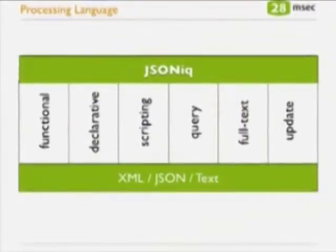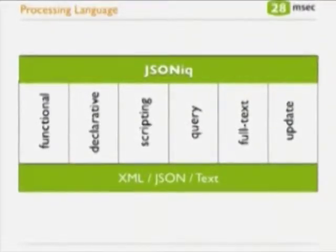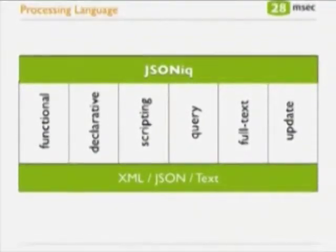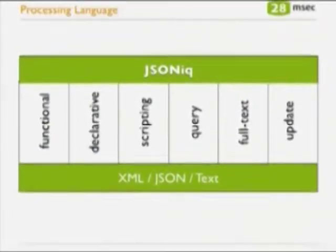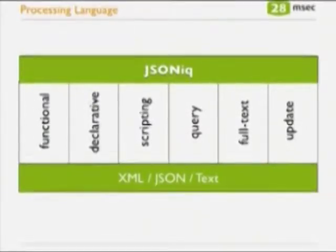Let me start by showing you the processing language that we have developed. The processing language is called JSONic. It's a functional, declarative language — you express what result you want, but you don't specify the algorithm. It has scripting functionality, querying functionality, full-text functionality, and update functionality. And it does that for all data formats: XML with schema, XML without schema, JSON, and text.